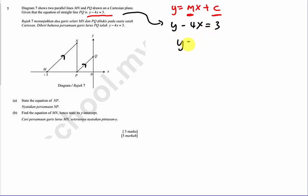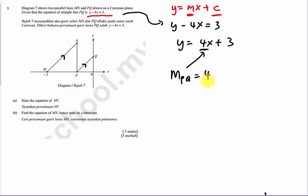Therefore y equals to 4x plus 3. From this I can identify that the gradient for PQ is 4, and 3 is the y-intercept of PQ.